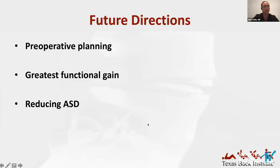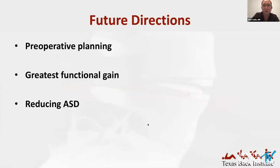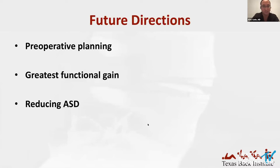In terms of future directions, this may hold promise as a new consideration in preoperative planning when defining a patient's unique cone of economy and how they function within that. The concept of ideal standing alignment continues to be refined, and we can hopefully define the alignment that will provide the greatest functional gain — the ultimate goal of surgical correction. It might even help us understand the dynamic component that contributes to adjacent segment degeneration and hopefully reduce it.